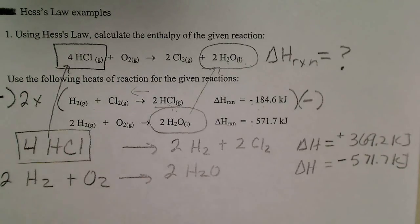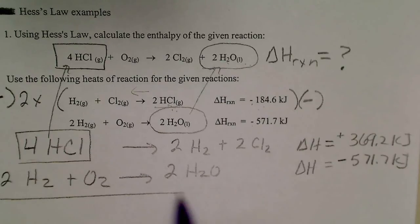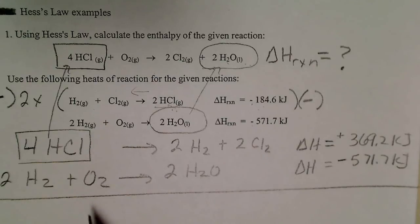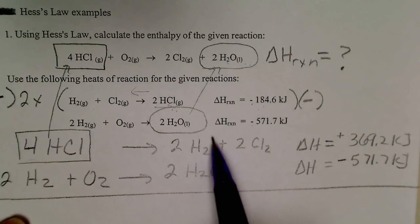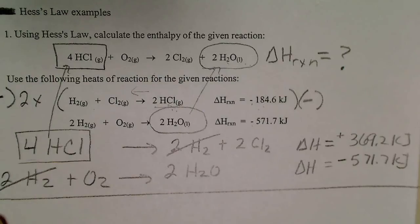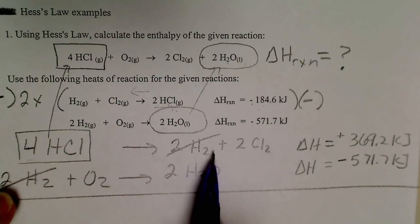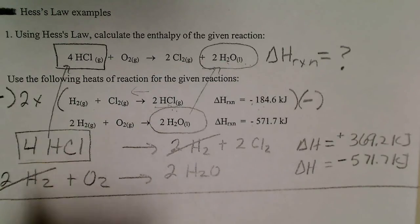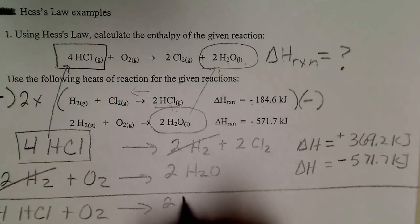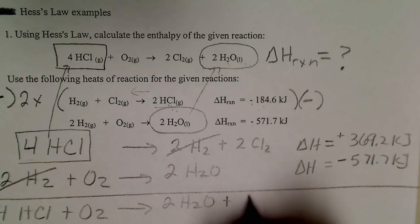And from here, what we're going to do is add these two equations together. So if I add the two equations together, whatever appears on the right hand side and on the left hand side can be canceled. And when I cancel what I've got on both sides, then I'm left with 4HCl plus O2, making two water molecules for two moles of water and two moles of chlorine.